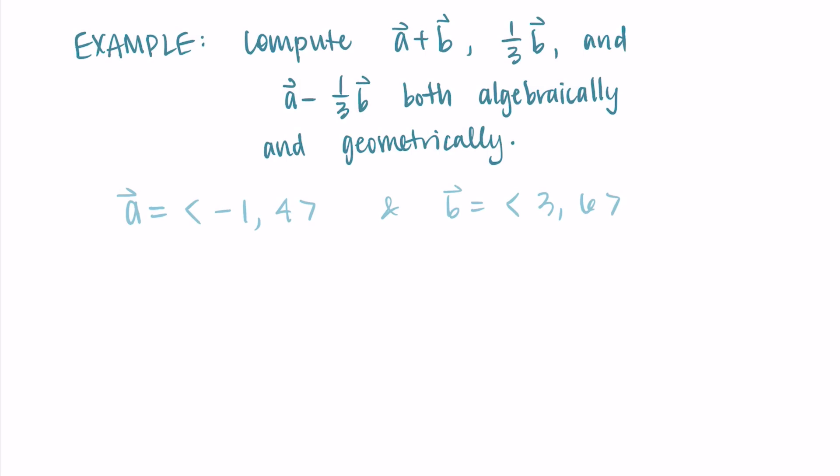I'm going to go ahead and do it algebraically first. And actually, why don't you try that out on your own? Try to add a and b, do one-third of b, and do a minus one-third b algebraically and see what your resulting vectors are, and then come back and we'll do it together.